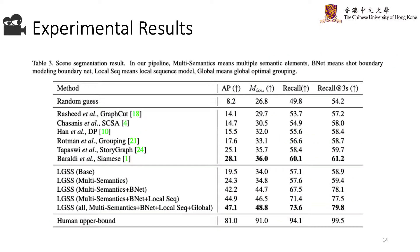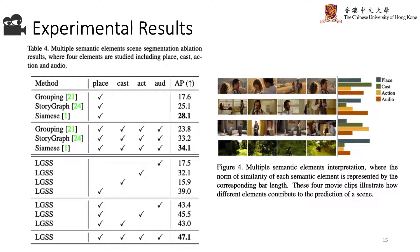With our design, the performance improves gradually and outperforms existing methods by a large margin. As shown in the ablation studies on multi-semantic elements, all the methods achieve 20-30% relative improvements, which show the effectiveness of the usage of semantic cues.